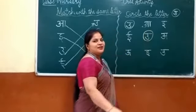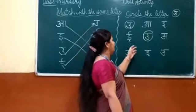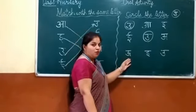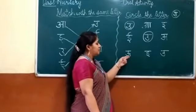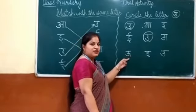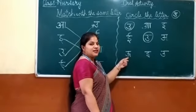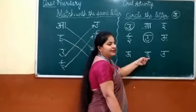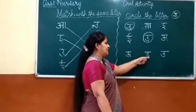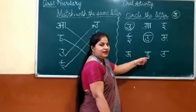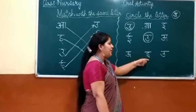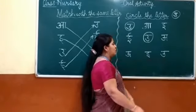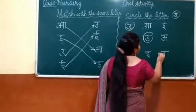Yes, like this. Okay, very good. Come on to the next slide. This is the letter Bada U. Bada U se U. This is the letter Bada U — Bada U se U. This is the letter Chhoti U — Chhoti U se Ullu. And this is the letter Chhoti U se Ullu. Circle the letter Chhota U.